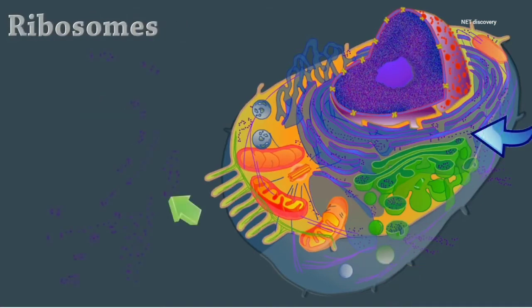Ribosomes are dense particles that consist of two subunits, each of which is composed of ribosomal RNA and protein. They may be free or attached to the rough endoplasmic reticulum.